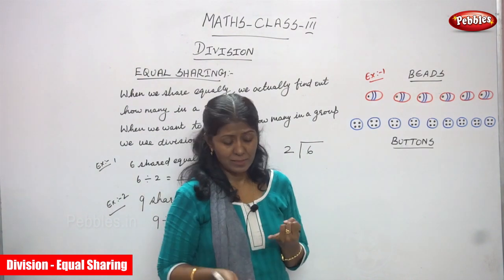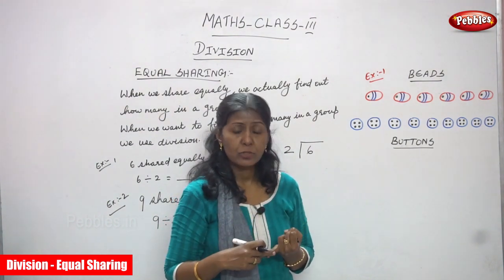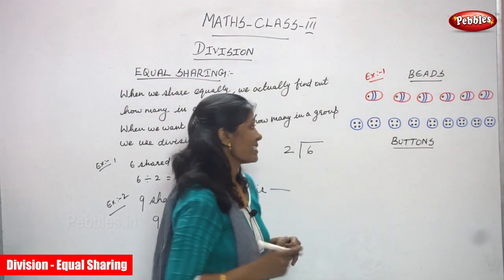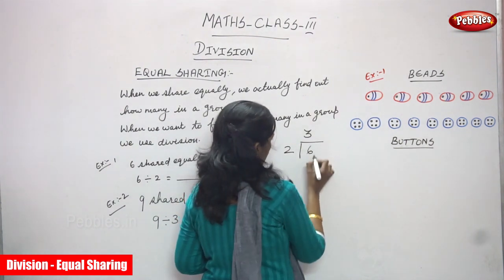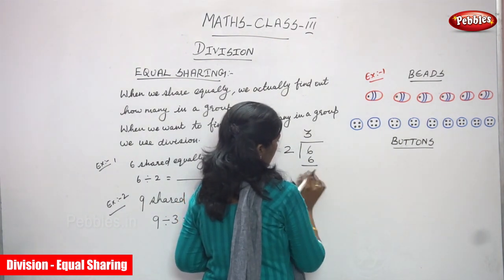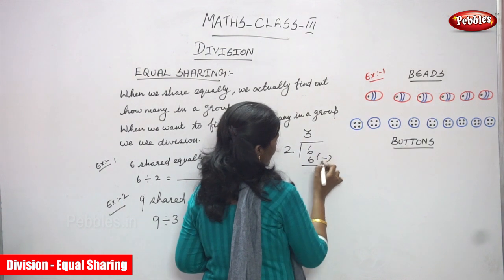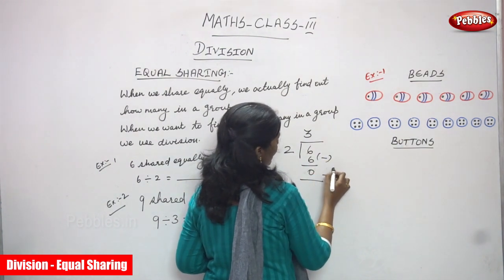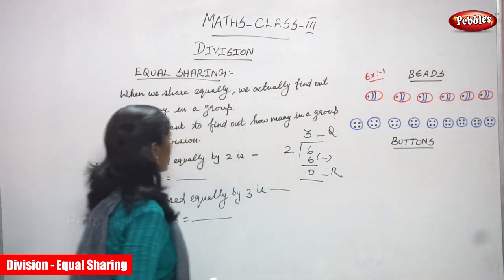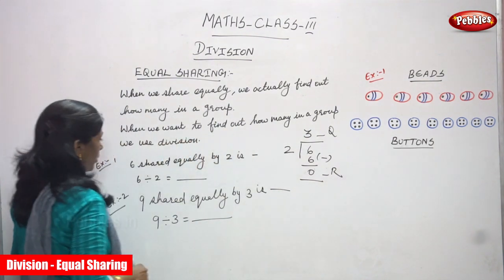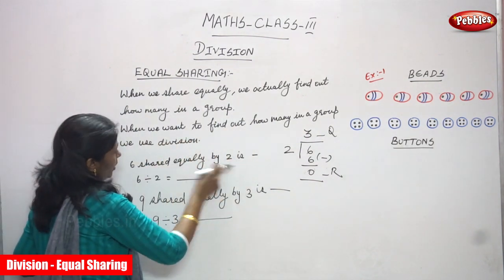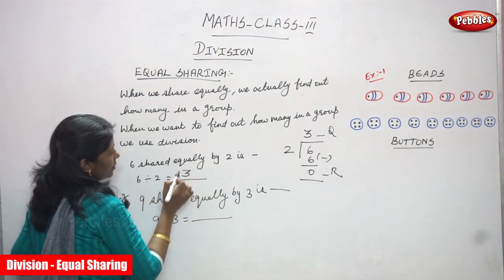So, 2 ones are 2, 2 twos are 4, 2 threes are 6. So 6 minus 6 gives you 0 — this is the remainder and this is the quotient. So, 6 shared equally by 2 is 3.